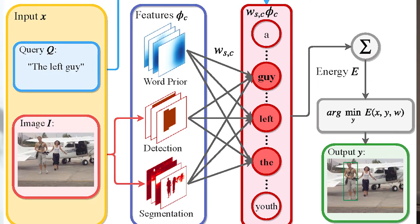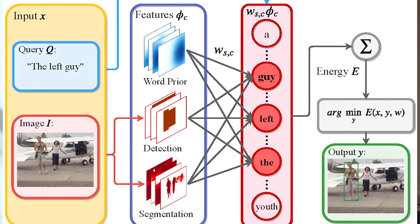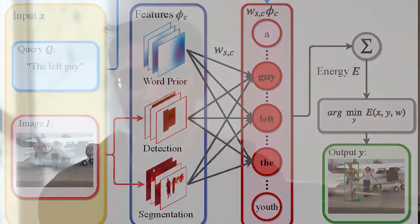In this work, we demonstrate that we can cast the problem of texture grounding into a unified framework that permits efficient search over all possible bounding boxes. Hence, the method is able to consider significantly more proposals and doesn't rely on a successful first stage hypothesizing bounding box proposals.